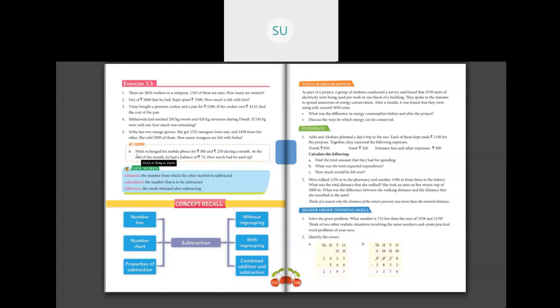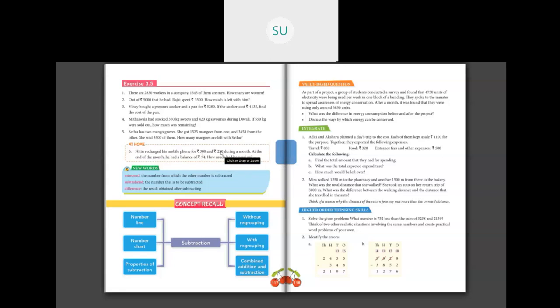Problem 6: Nithin recharged his mobile for 300 rupees and 250 rupees during a month. At the end of the month his balance was 74 rupees. How much did he use up? First add 300 plus 250, then subtract the balance 74 — this is your homework. This was chapter subtraction; the next class will start with the next chapter. Thank you, see you all in the next class.